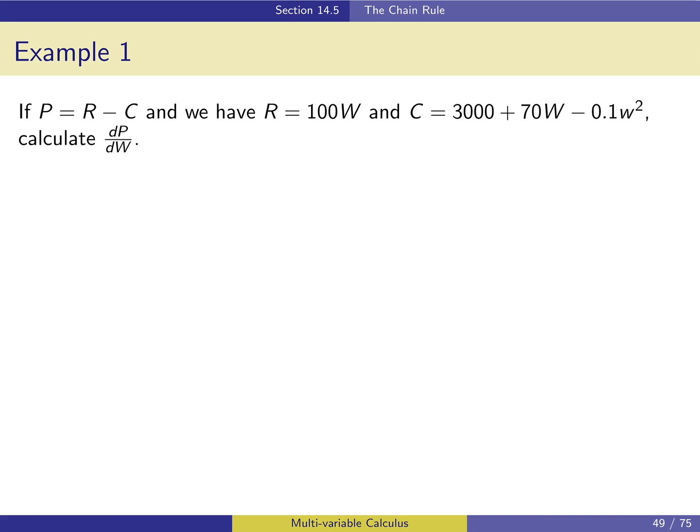Let's apply the chain rule to our previous example. Here we're given an actual function for cost: 3000 plus 70w minus 0.1w squared. In real terms, this means there's a fixed cost of about 3,000, a cost of about $70 per widget for materials, but the cost per widget actually goes down the more you make — this is commonly referred to as the effect of manufacturing at scale. This is a reasonable but rather simple model.